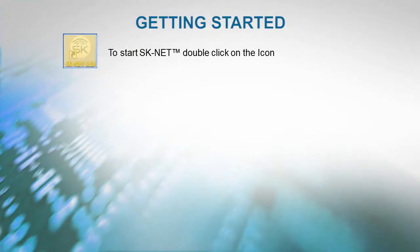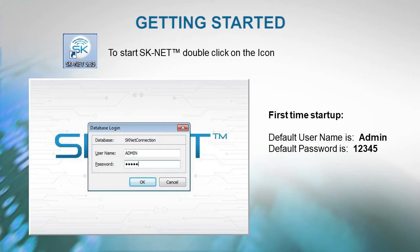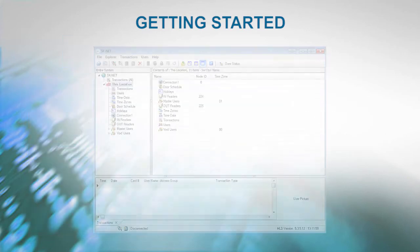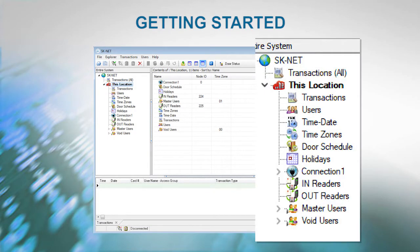To get started with SKNet, double click on the icon. The first time startup default username is admin, and the default password is 12345. After entering the password for the first time, you will see the SKNet's default screen.